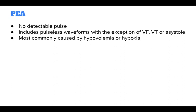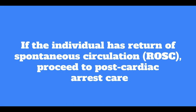Hypovolemia and hypoxia are the two most common causes of PEA. They are also the most easily reversible and should be at the top of any differential diagnosis. If the individual has returned spontaneous circulation, or ROSC, proceed to post-cardiac arrest care. Atropine is no longer recommended in cases of PEA or asystole.